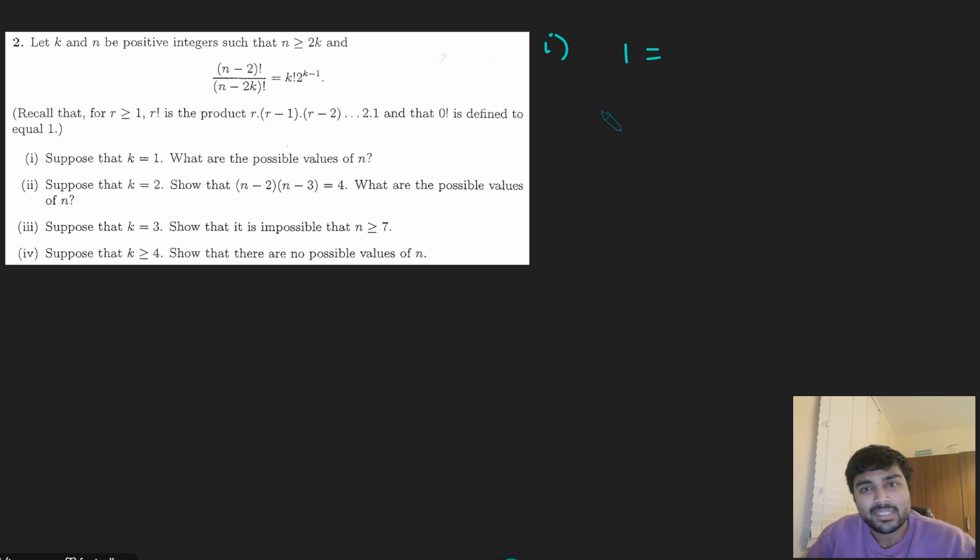you get (n - 2)! divided by (n - 2)!, that's definitely going to be 1, equals on the right-hand side, well, k is 1, so 1! times 2 to the 1 minus 1, and that will just be 1. So this is true for all values of n. I guess we do need n to be at least 2k, so any integer n which is at least 2.